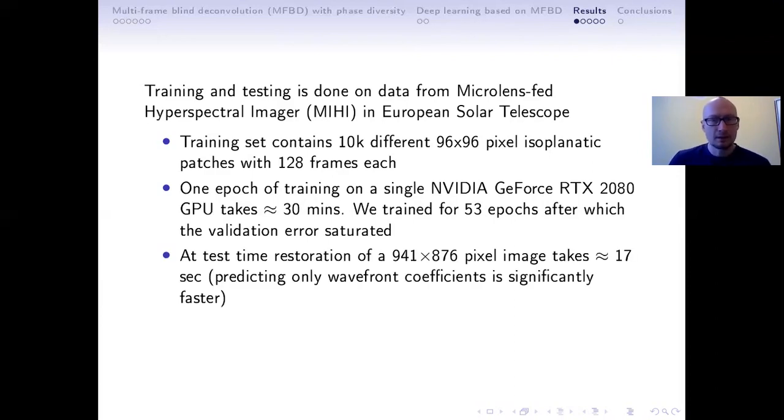At test time, the restoration of the full field takes around 17 seconds. But this includes, of course, calculating these optical transfer functions and doing the full restoration. If we would only want to predict wavefront coefficients, it would be even much faster. But this restoration speed is already several orders of magnitude faster than can be achieved with any gradient descent based optimization method.